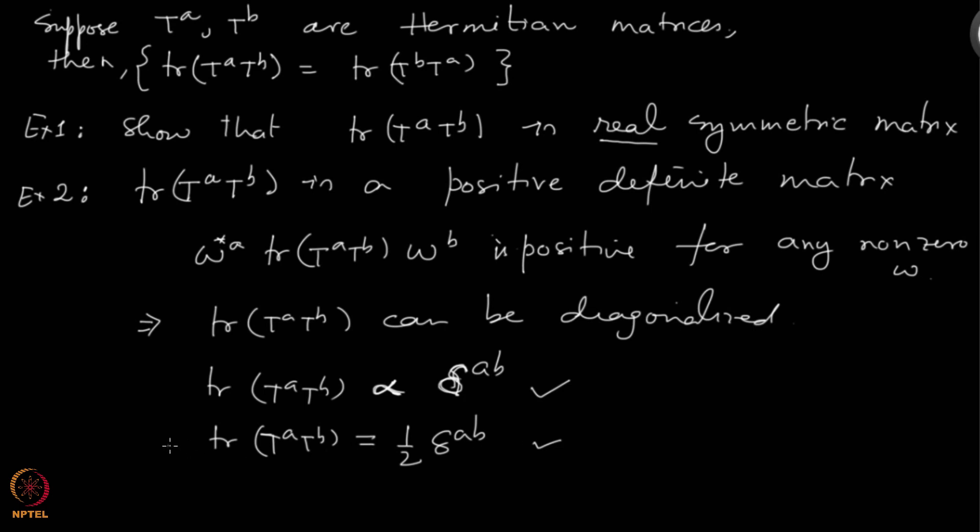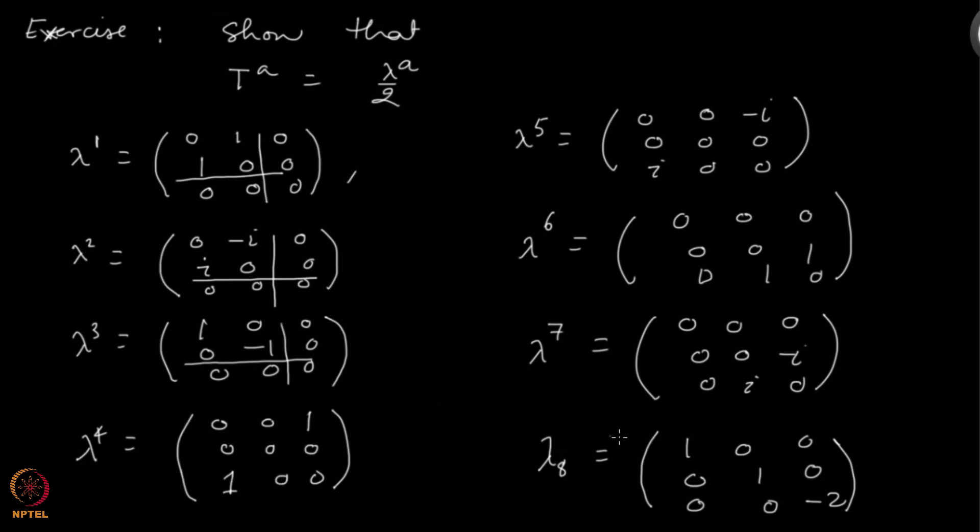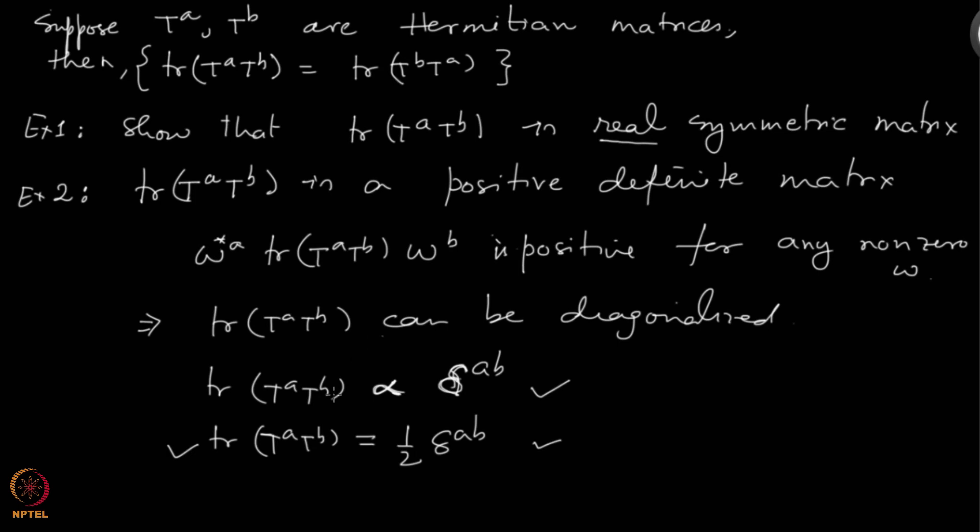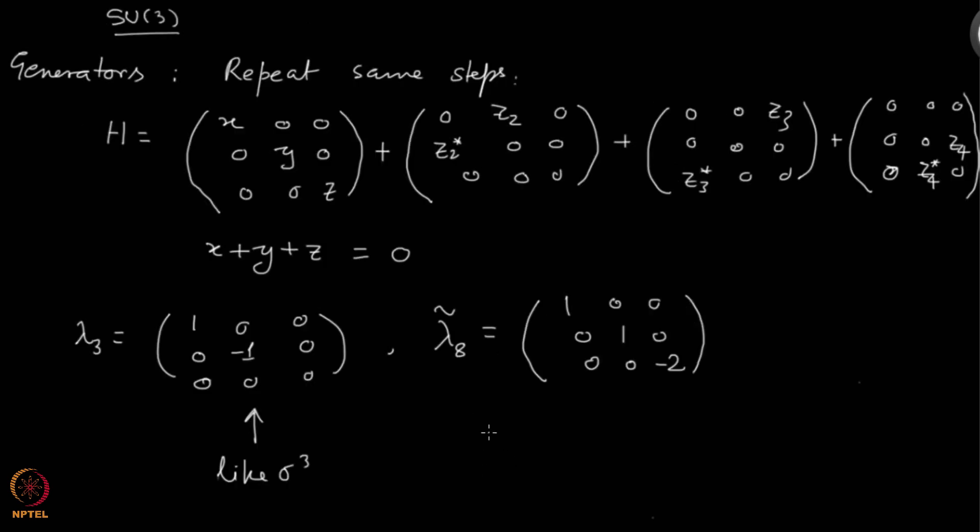Lambda_8 is the following. You can choose lambda_8 to be this, but because we are going to impose this condition that trace T_A T_B is half delta_AB, then you can check that you will have to put 1 over square root of 3. If you use these as the matrices, these are called Gell-Mann matrices, then the generators will satisfy this property.